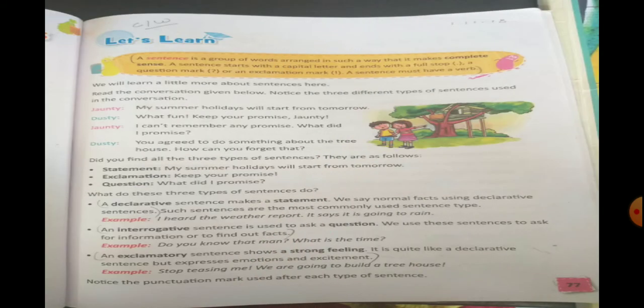Now let's discuss about sentences and its types. A sentence is a group of words that is arranged in such a way that it makes complete sense. A sentence always starts with a capital letter and it might end with a full stop, a question mark, or an exclamation mark, and a sentence will always have a verb.